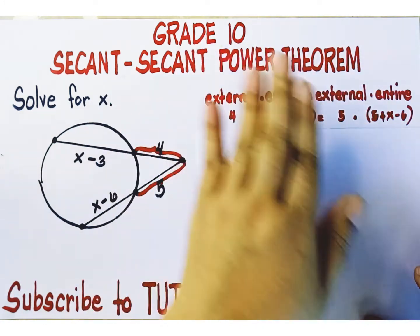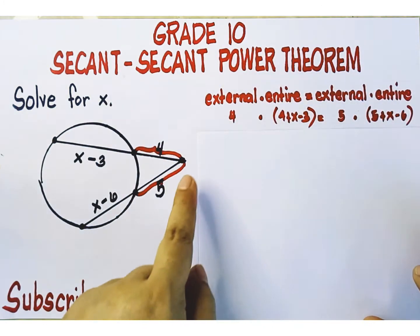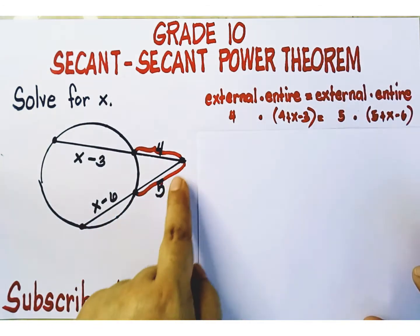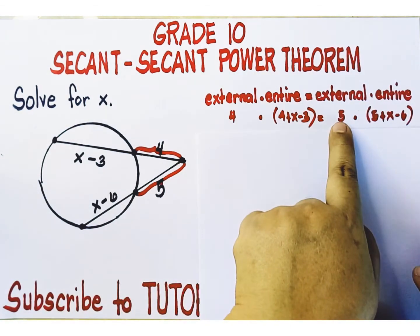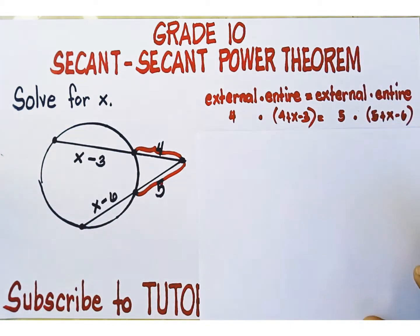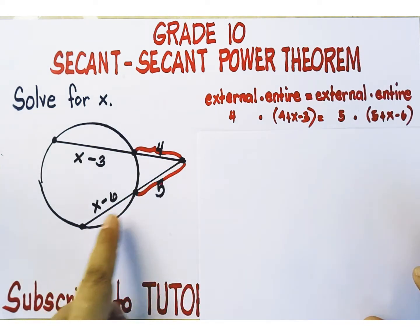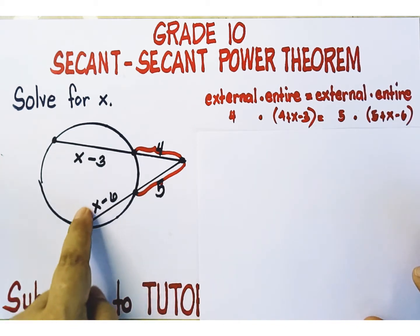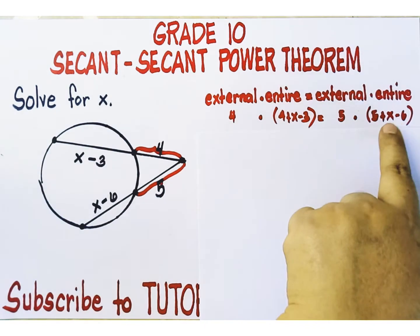We follow the same pattern for the right side of the equation. Focus on the other secant segment. The external is given — its length is equal to five units. The entire secant segment is the sum of the external and the internal parts, so it's equal to five plus the expression representing the internal part's length, x minus six.